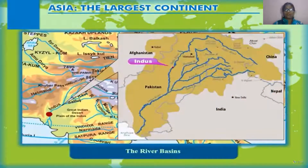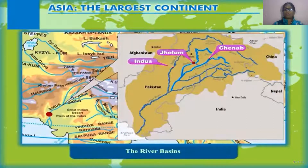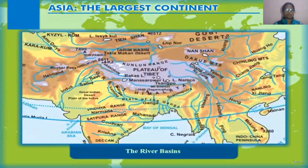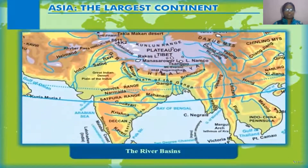The Indus river, along with its tributaries, makes a fertile plain. The tributaries of the Indus are the Chenab, Jhelum, Ravi, Beas, and Sutlej. The next rivers are the Ganga and Brahmaputra.